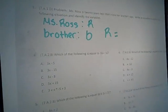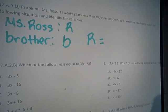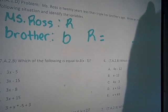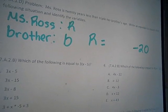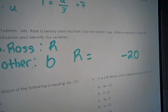And it says 20 years less than triple her brother's age. So we're going to put the 20 years less at the end. And it says than triple her brother's age.